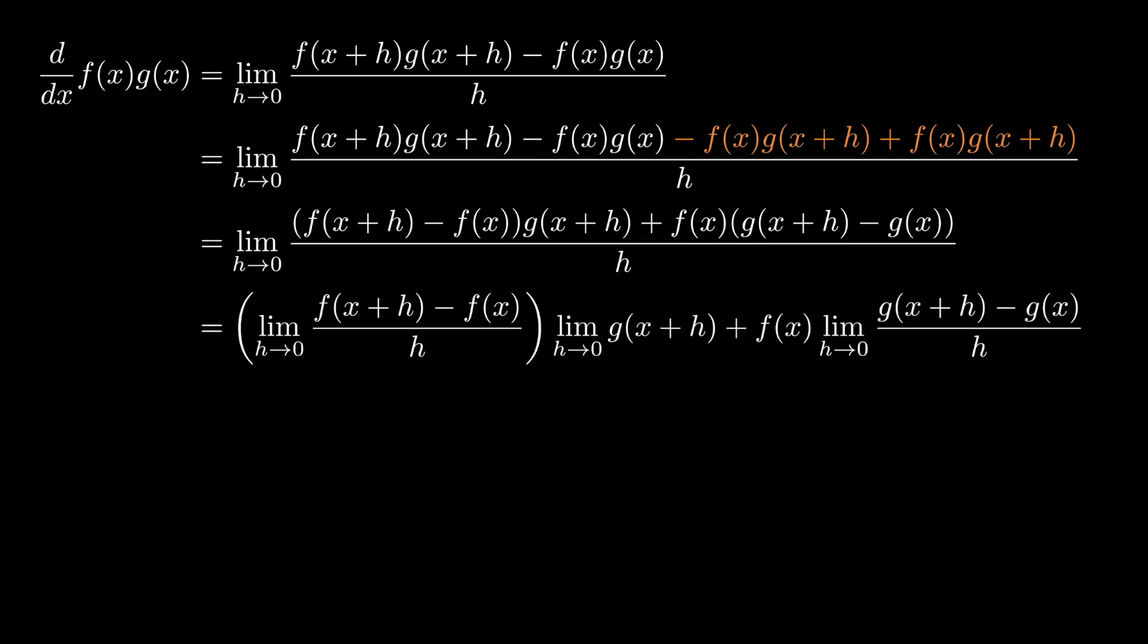Since we're assuming both of these functions are differentiable, we're also assuming they're continuous. And so the limit of the product is the product of the limits. The limit of g of x plus h is, of course, g of x. And we're able to reproduce the symbolic rule that we're used to.